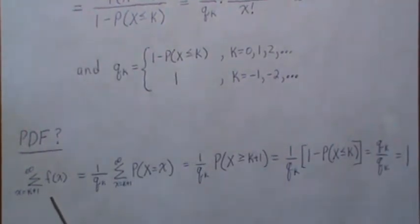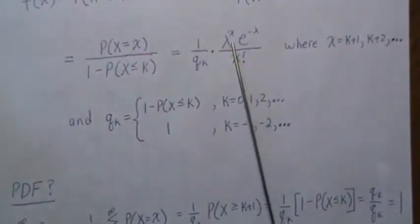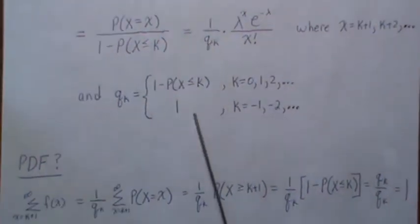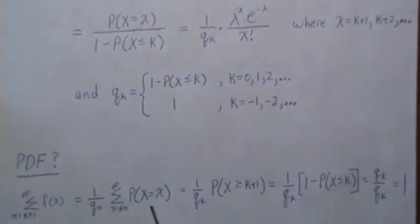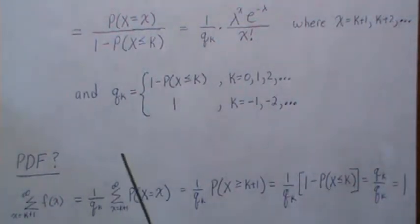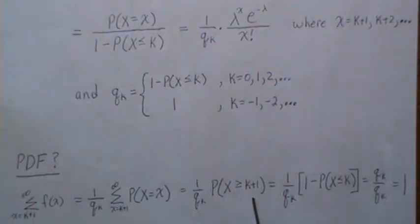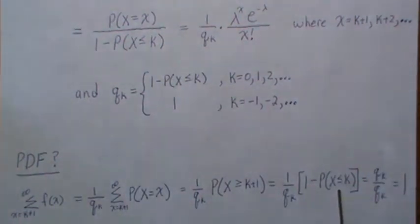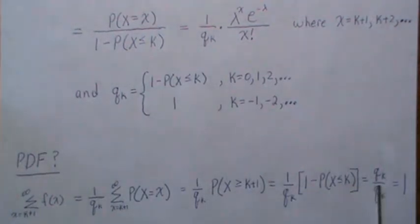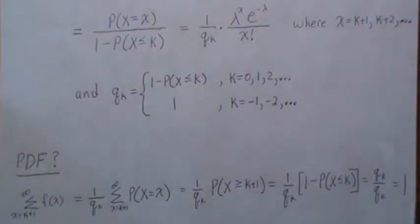To verify it's a valid PDF, we sum over all possible values from k+1 to infinity. The q sub k term has no index so it comes out of the summation, and summing this probability from k+1 to infinity is the same as saying P(x greater than or equal to k+1), which equals 1 minus P(x less than or equal to k), which is q sub k.